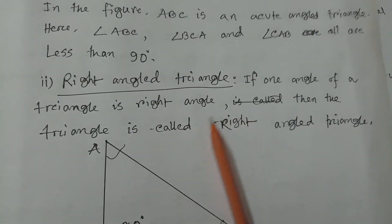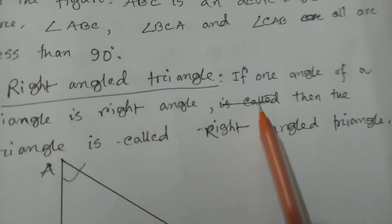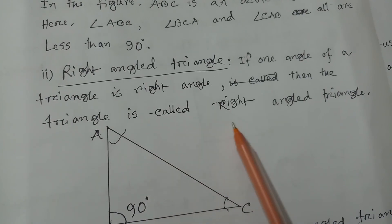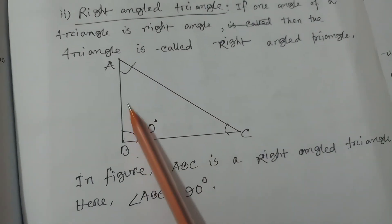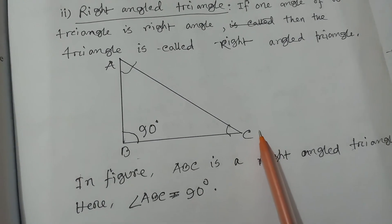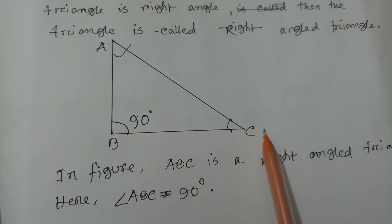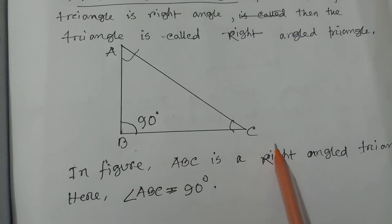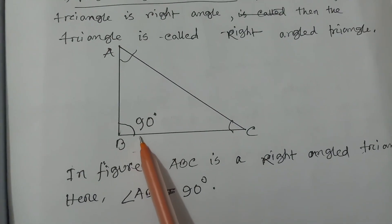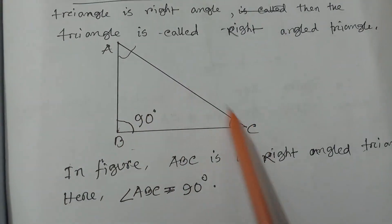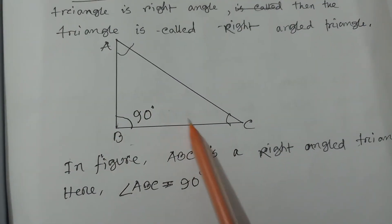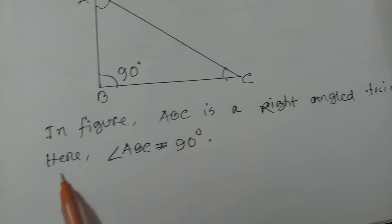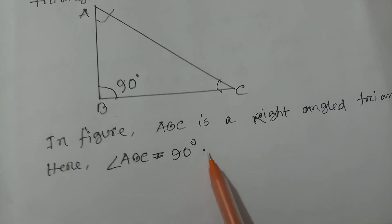The second one is right angle triangle. If one angle of a triangle is a right angle, then the triangle is called a right angle triangle. Here, ABC is a right angle triangle. Angle ABC is a right angle, and the other two angles are acute angles. So this triangle is called a right angle triangle. In figure, ABC is a right angle triangle, where angle ABC equals 90 degrees.